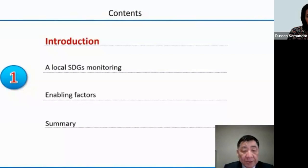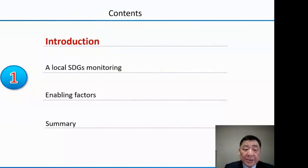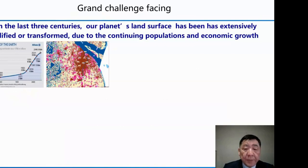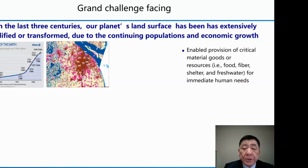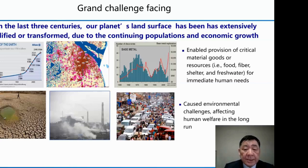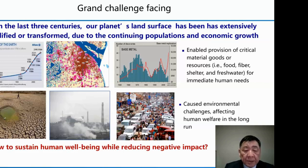I will start by introducing local SDG monitoring, its enabling factors, and a summary. In the last three centuries, in particular the past few decades, humans have modified tremendously our planet's land surface due to continuing growth of population and economy. On one side, this is necessary because we need to provide sufficient critical materials to meet immediate human needs such as food, shelter, and water. On the other side, this has caused serious environmental problems such as air pollution, traffic congestion, and shortages of water and mineral resources, affecting human welfare in the long run.